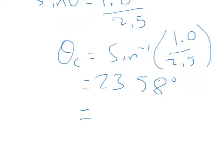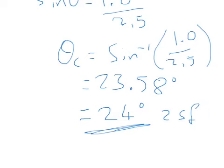How would we round this? We've got two significant figures for both of our refractive indices, so this would round to 24 degrees to 2 significant figures. And that's how to find the critical angle.